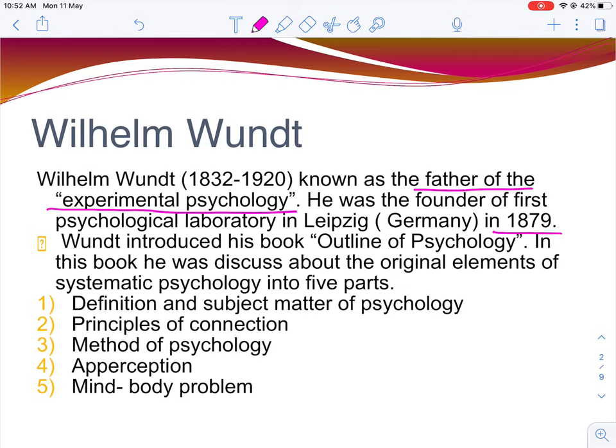He introduced his book, Outline of Psychology. In this book he discussed the original elements of systematic psychology, dividing it into five parts. In this Outline of Psychology, he spoke about the system of systematic psychology, discussing some of its key elements.